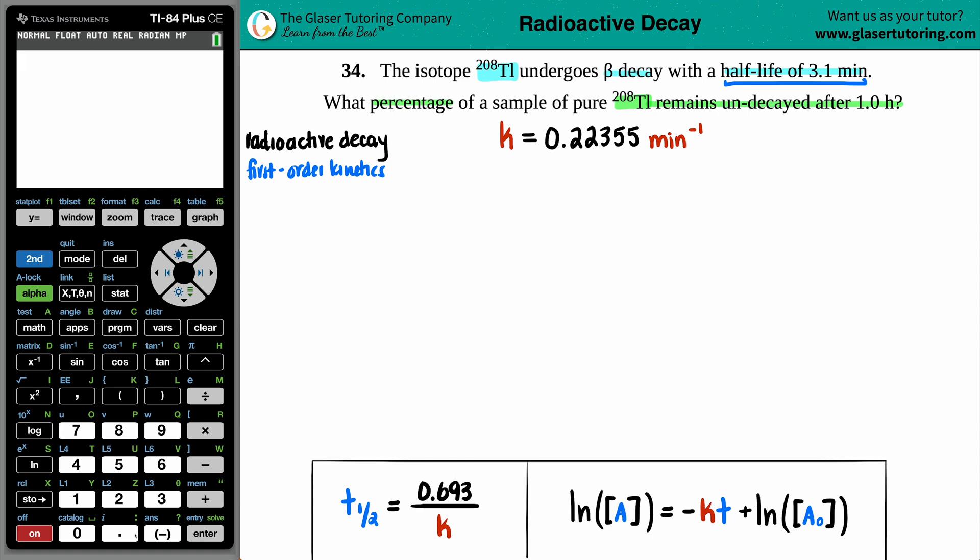Now, basically what we did was we use this formula, we use the half-life formula to find out that K value because they told us that the half-life was 3.1 minutes. So if I just do the quick division here, 0.693 divided by the half-life, if we just rearrange the formula, you would get close to 0.2235 and then I round it. But I'll use this value when we're doing the math.